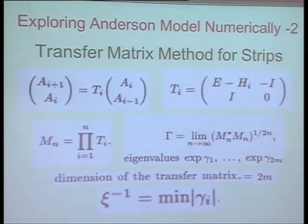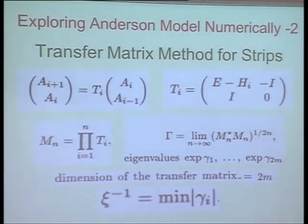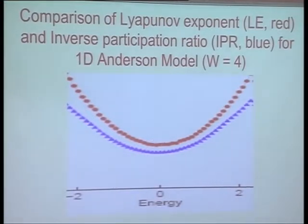The transfer matrix is E minus the on-site Hamiltonian and the identity. By looking at the eigenvalues of the product of these transfer matrices as you increase the size of the system, you can extract the localization length from the minimum eigenvalue — this is known as the Lyapunov exponent. So the Lyapunov exponent, which also goes as 1/ξ, will be very much the same as the inverse participation ratio. The red is the Lyapunov exponent as a function of energy, and the blue is the inverse participation ratio. They are not identical but pretty much proportional to each other. This is for W=4.